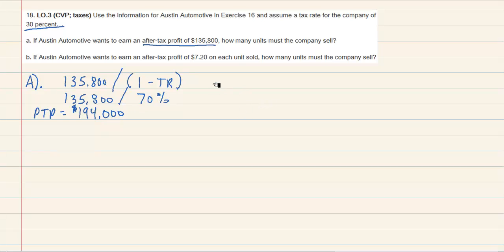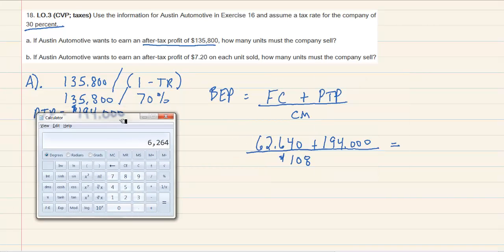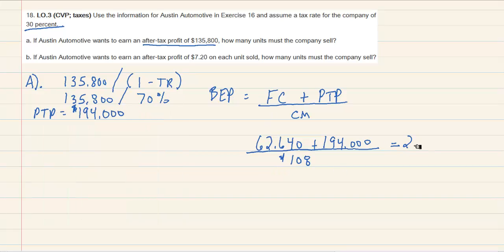From this point, we can go about it the same way as a traditional break-even point problem: take our fixed cost, add pre-tax profit, and divide by our contribution margin. Our fixed cost were $62,640. We add the pre-tax profit of $194,000 and divide the whole thing by our CM of $108. Going through the calculator: $62,640 + $194,000 divided by $108 gives us 2,376 units. That's how many units we have to sell to get an after-tax profit of $135,800.